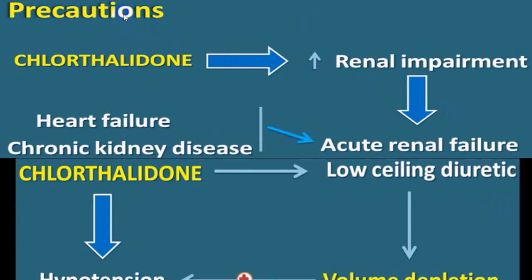There are certain precautions to keep in mind. When using chlorthalidone in the presence of renal impairment, if GFR is reduced to less than 30, it can precipitate acute renal failure. In the presence of heart failure and chronic CKD, it can also precipitate acute renal failure. Use chlorthalidone with caution in stage 3, 4, and 5 CKD with heart failure — it is almost contraindicated in those settings.